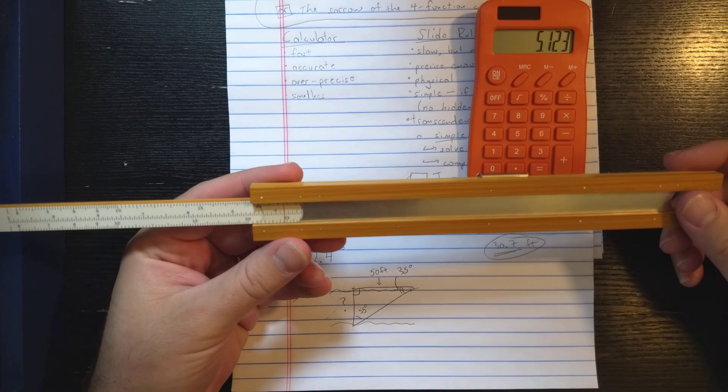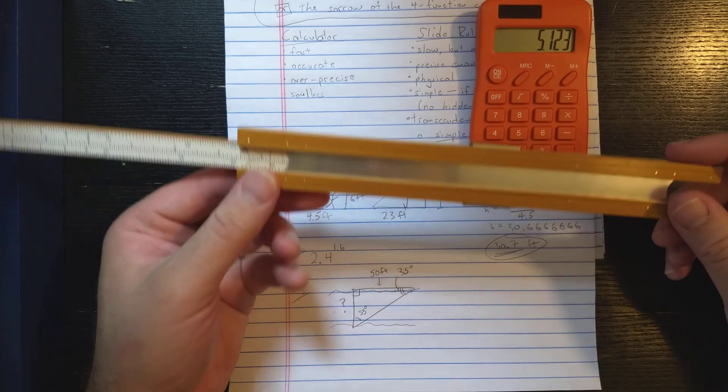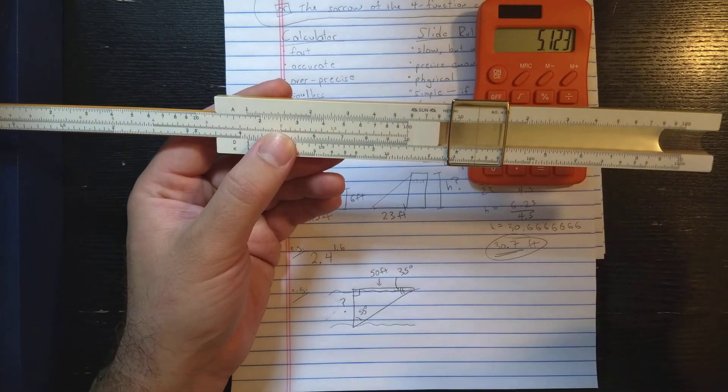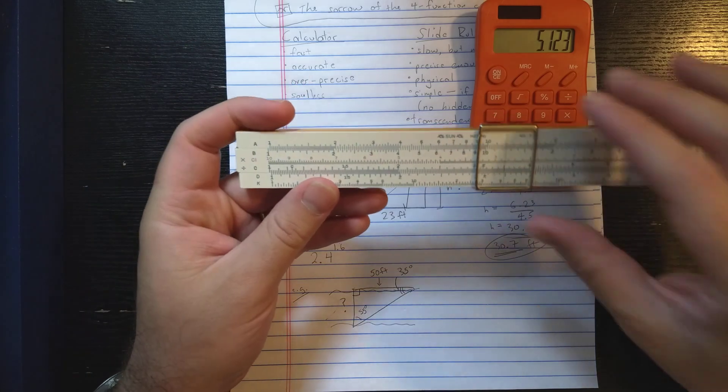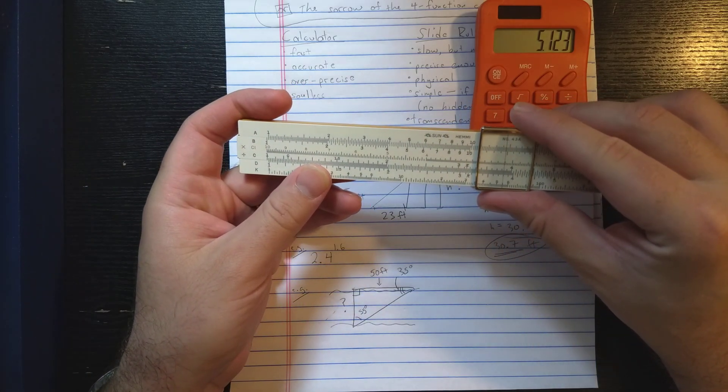I'm going to read the logarithm on the L scale under that hairline. Looks like 0.38. So to compute this, I'm going to compute 0.38 times 1.6. I'll use the main scales for that. So let's see. There's 3.8 on the D scale.